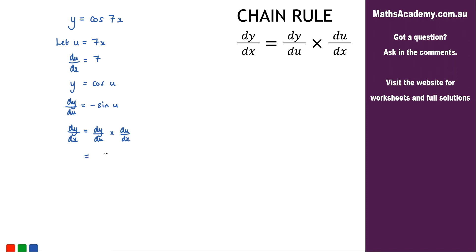We know what dy by du is. dy by du is this here. So we've got negative sine of u and that's multiplied by du by dx. And du by dx is 7. So multiplying by 7.